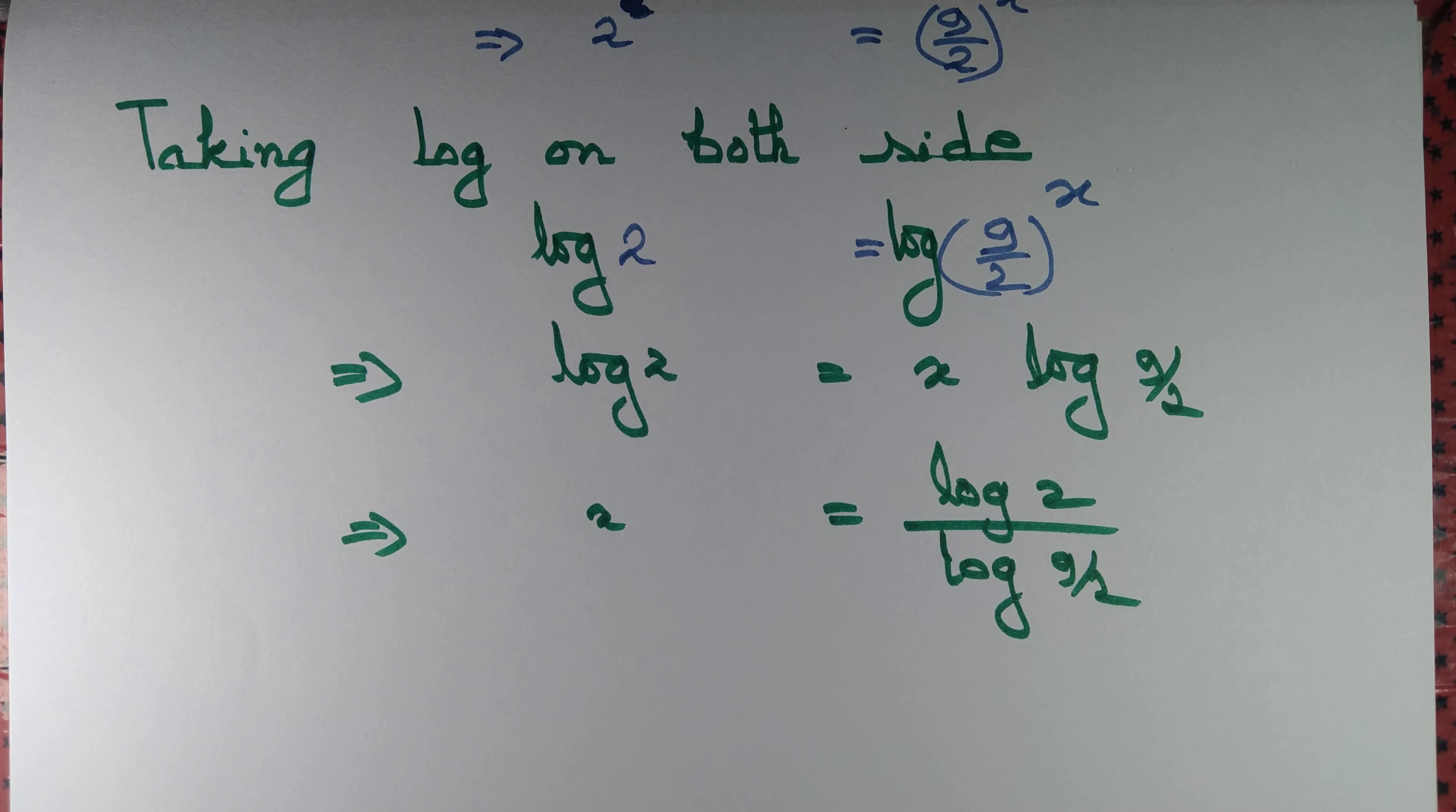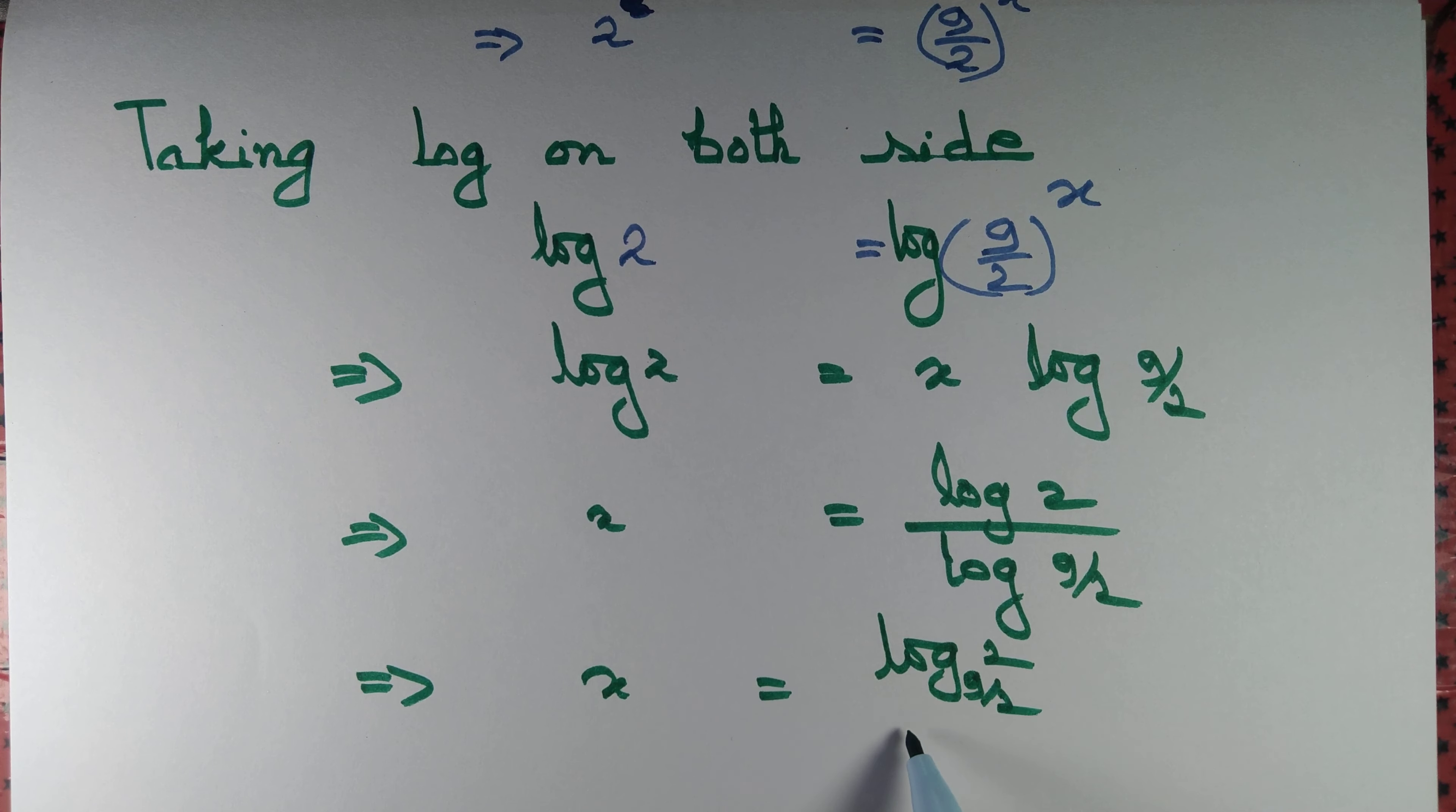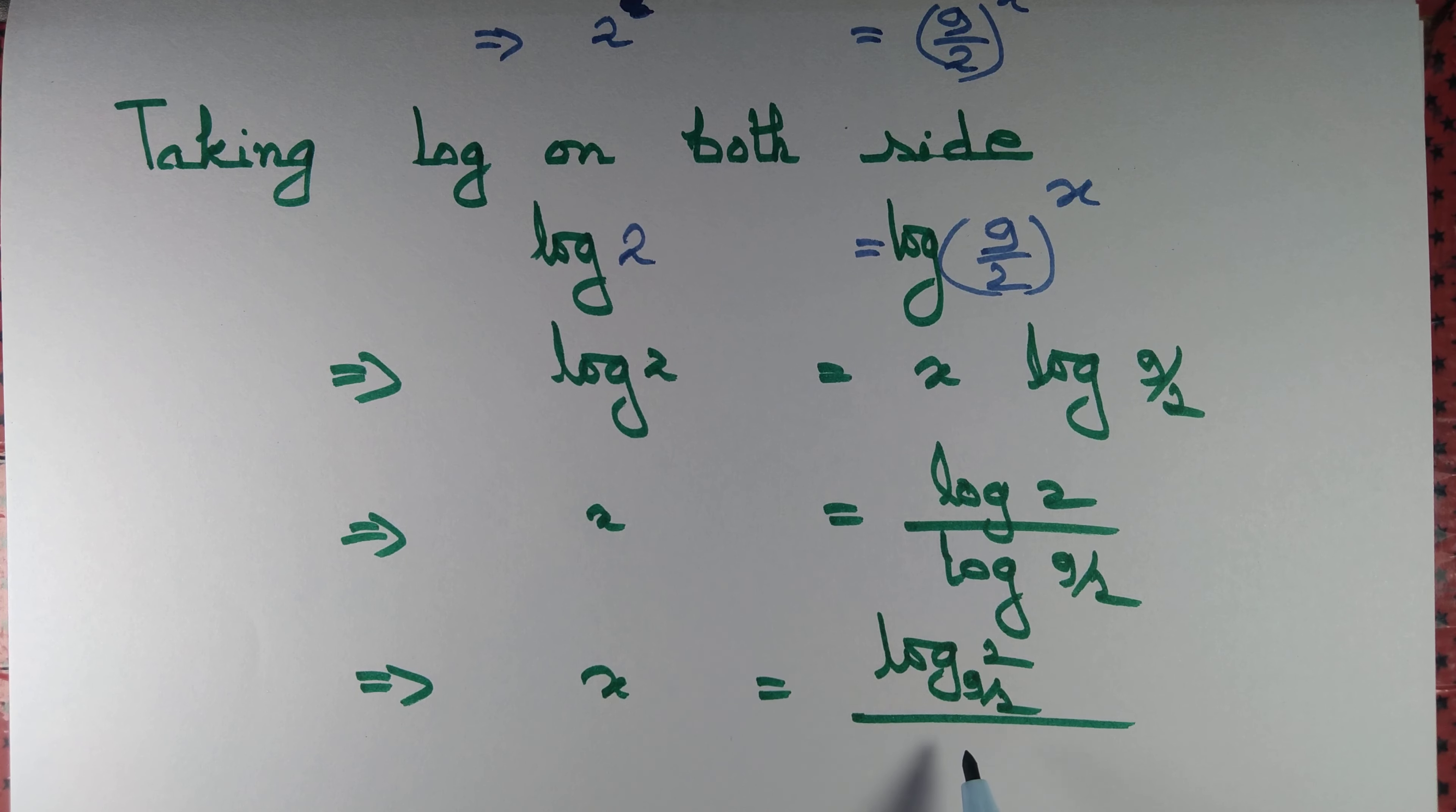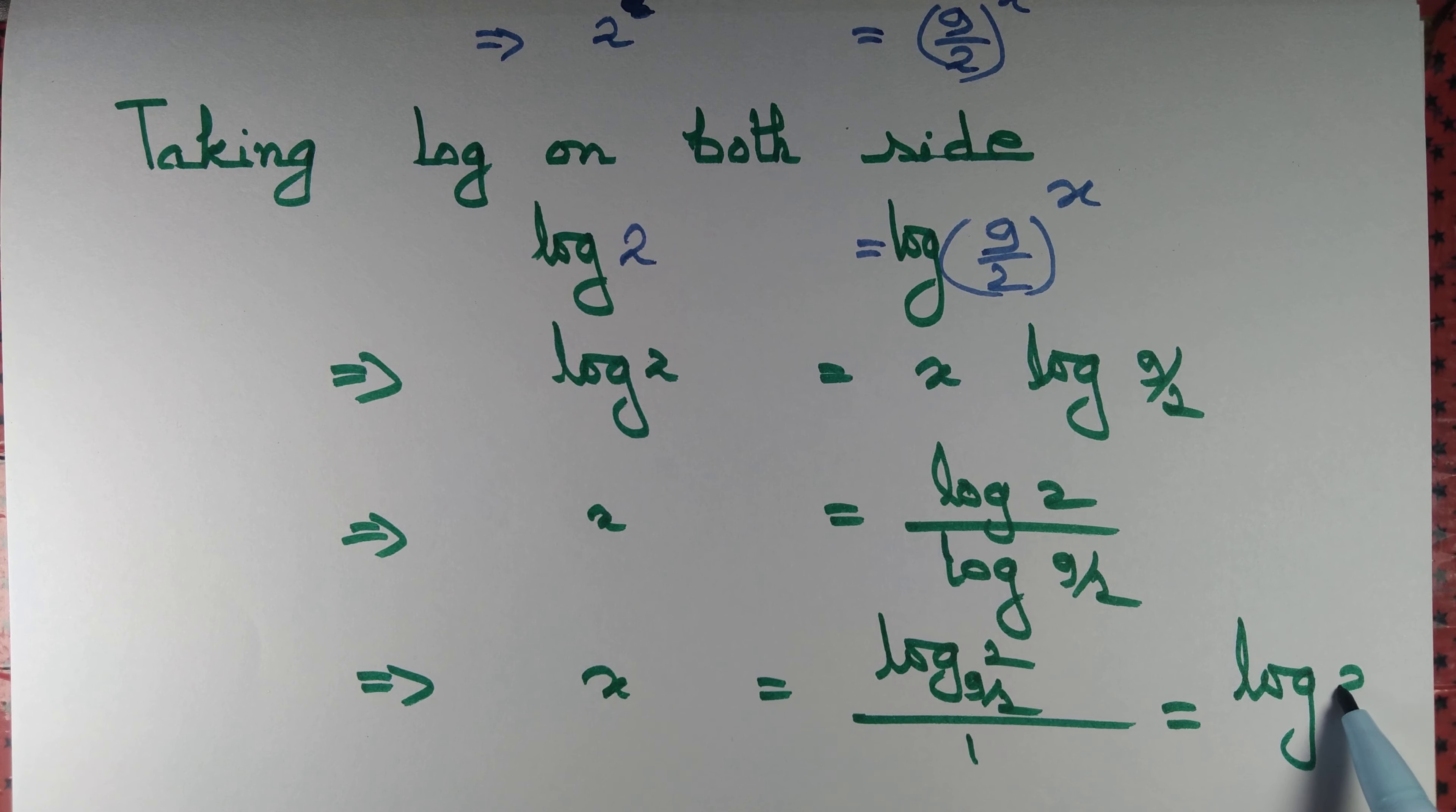So far we could have taken any base of the logarithm. Why don't we take base to be 9 by 2? In that case x equal to log of 2 with base 9 by 2 divided by log of 9 by 2 with base 9 by 2, which is 1. So x equal to log of 2 with base 9 by 2.